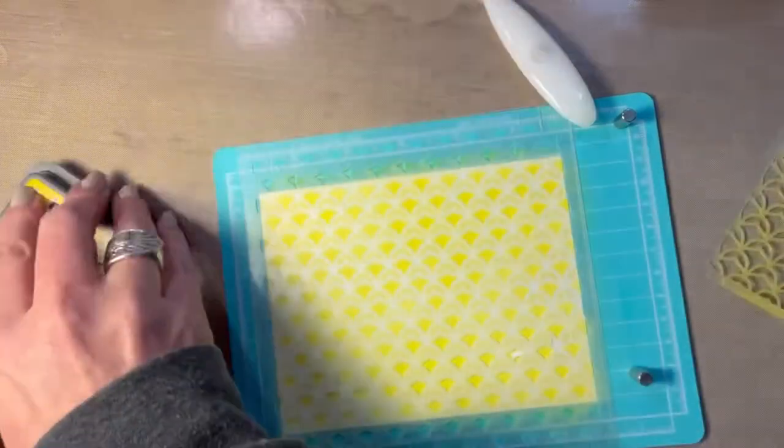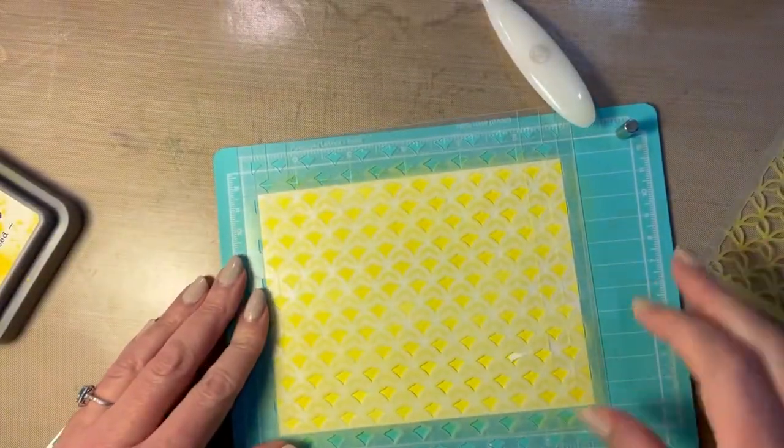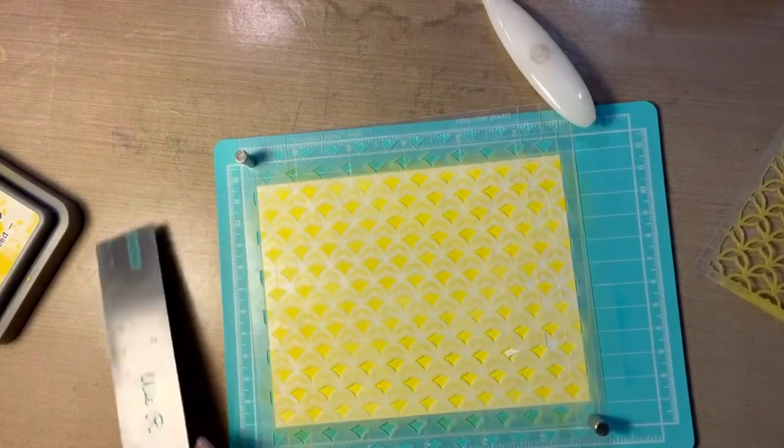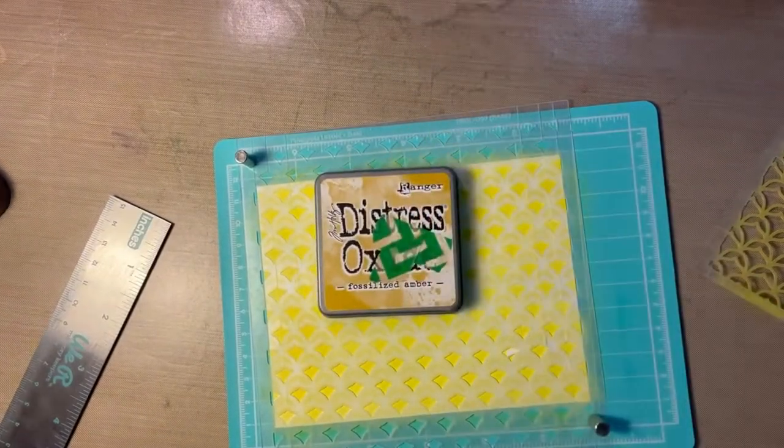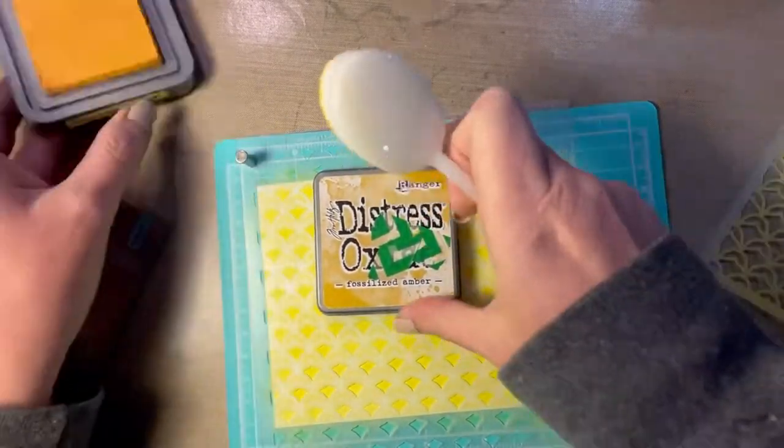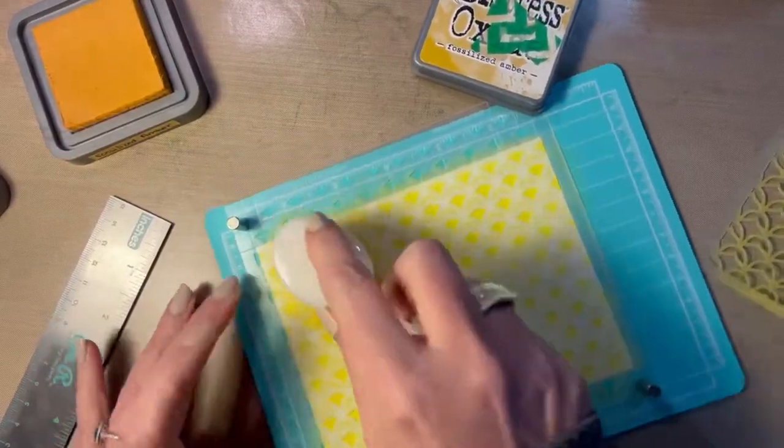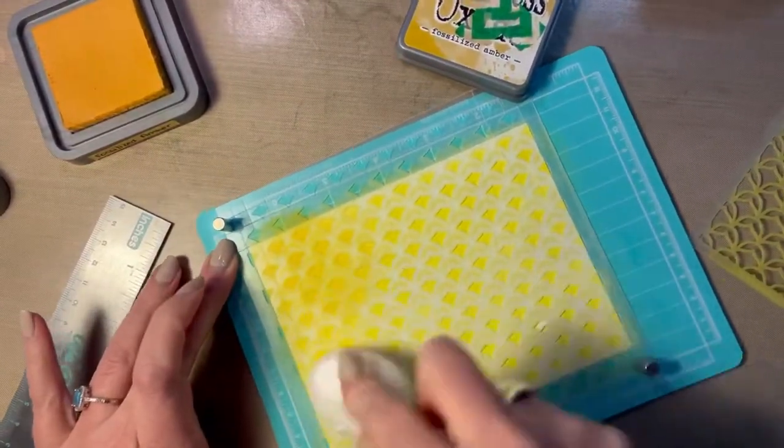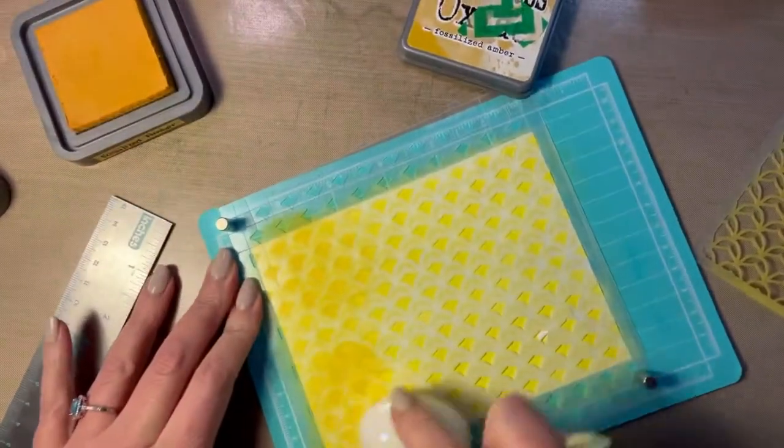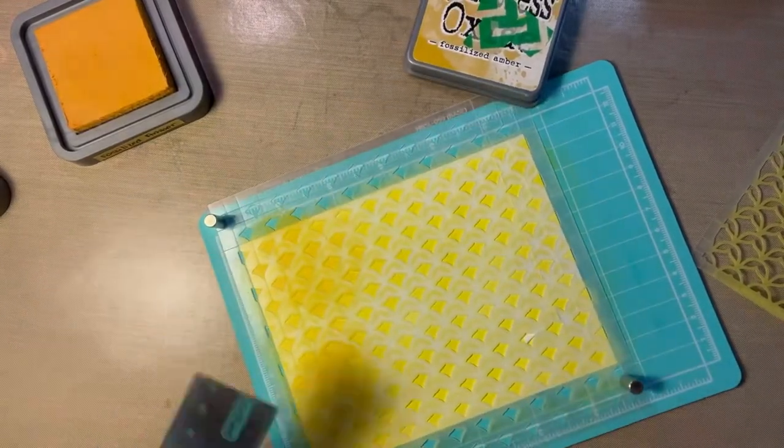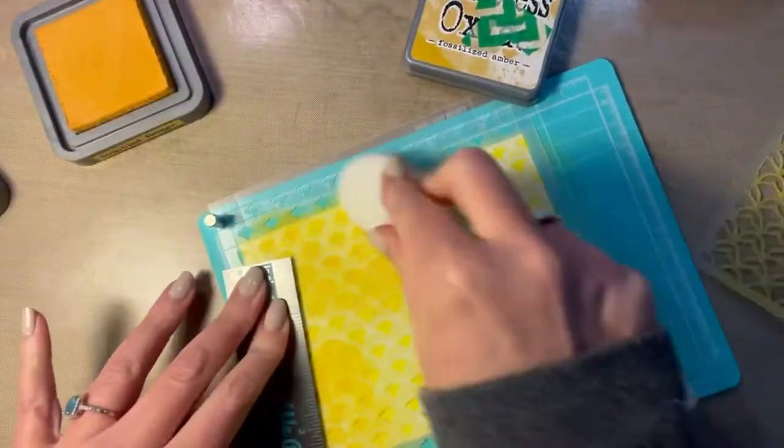So while I'm doing that, because I'm not doing anything special, just re-inking the whole thing, I'm going to talk to you a little bit about how you can mix and match from different companies. In this case I took the pineapple theme that was in the card and knew I wanted a pineapple background. So I went through my stencils and found these pineapple stencils.